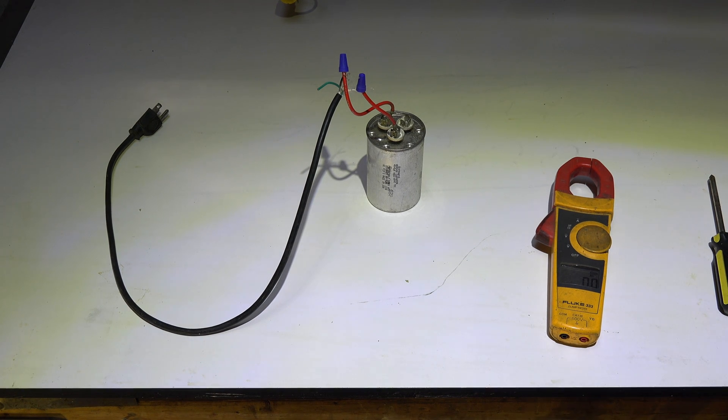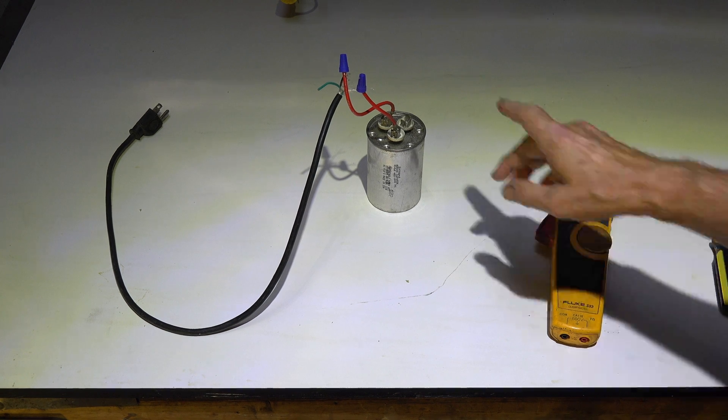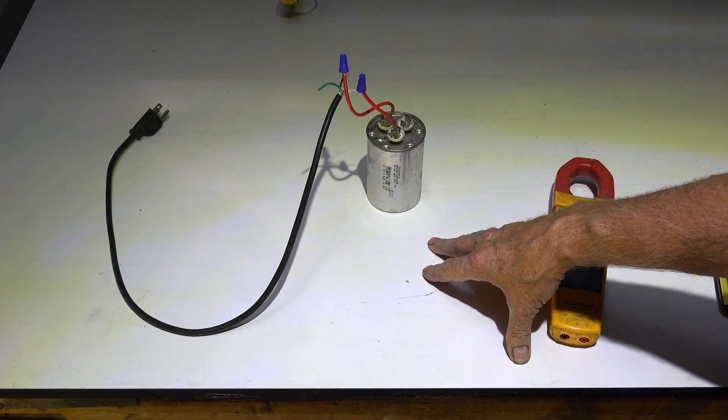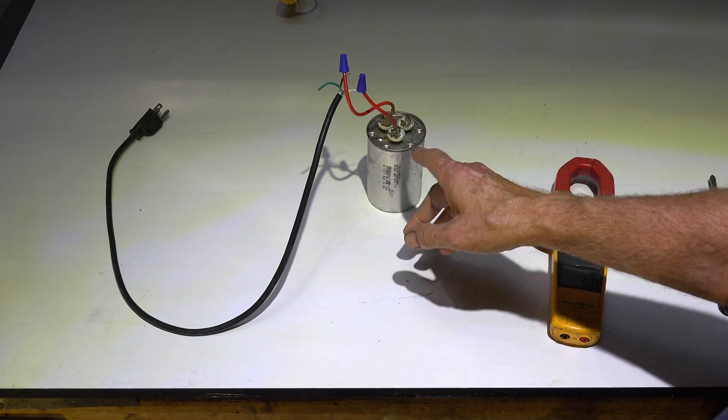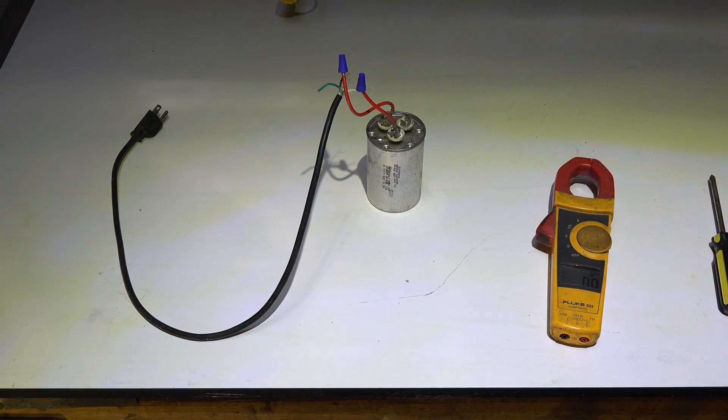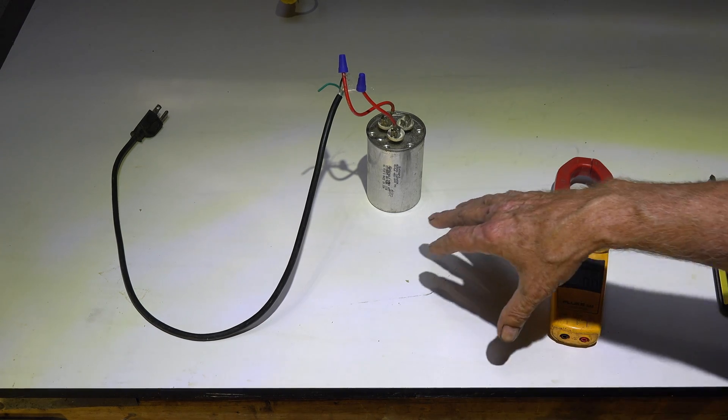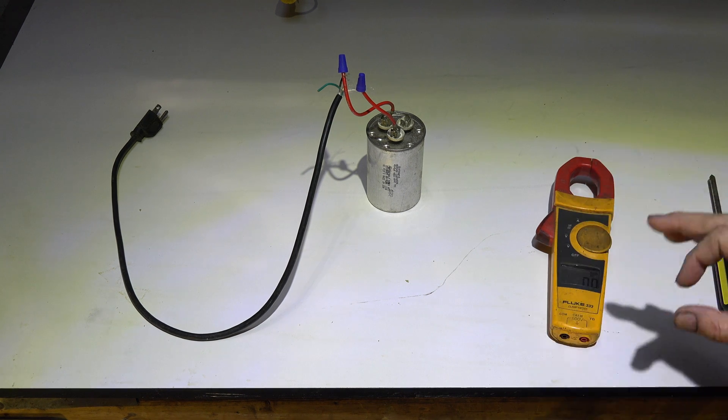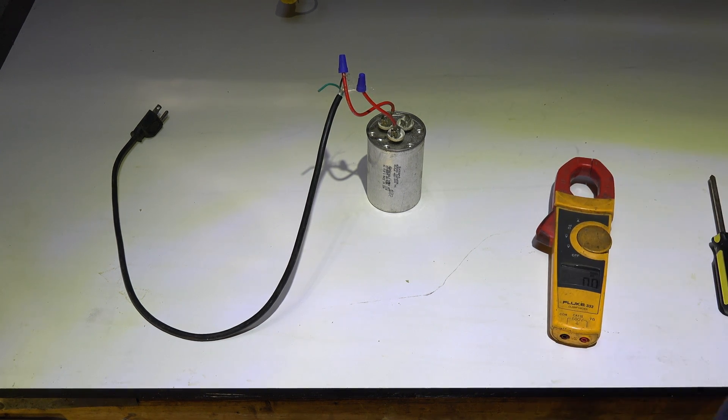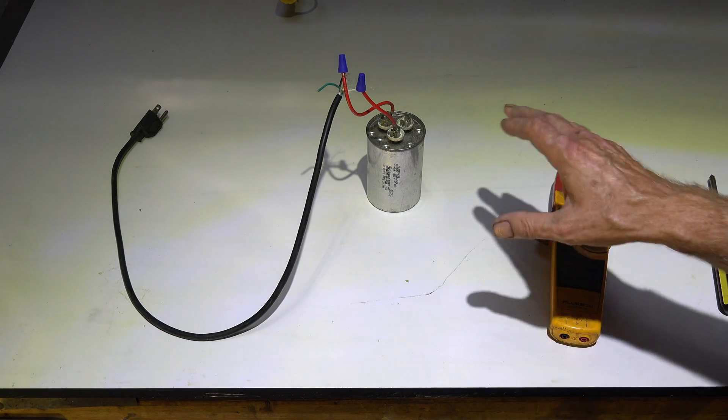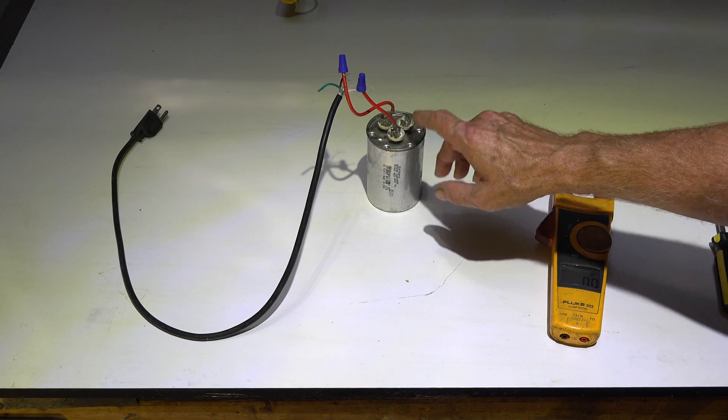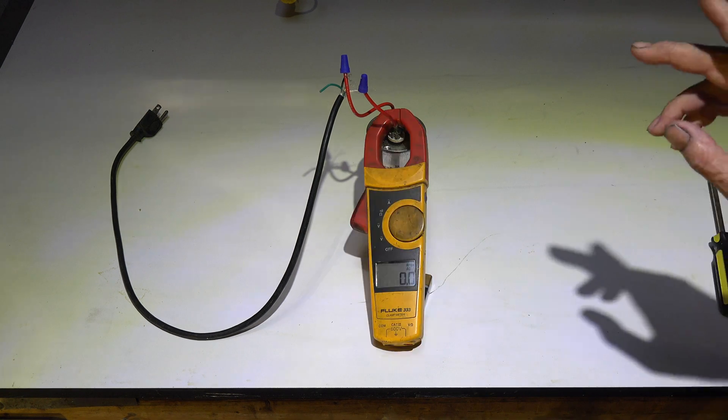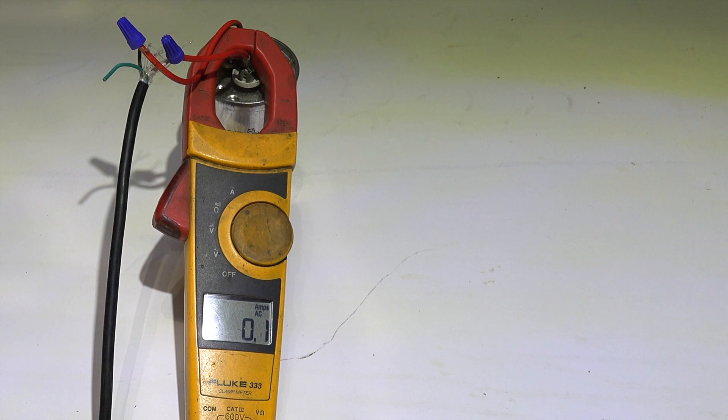Now I've set up a circuit to test what kind of amperage will run through one of these capacitors when power is applied to it. I've just got a little cord here. I'm going to plug the cord in. It's essentially the same circuit that's in that compressor. The power actually goes through the windings of the compressor, but the windings of the compressor have very little resistance. So there won't be much of a load on it. It is the capacitor that is providing this current regulation. When I plug this in, we're going to get an amp draw.